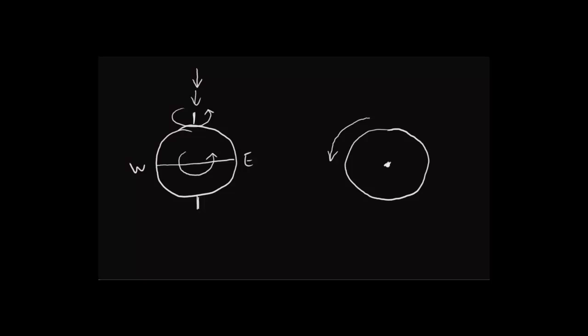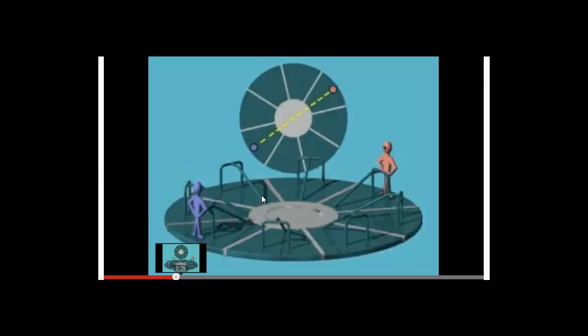Here's a merry-go-round illustration. The blue man just threw a ball to the pink man, and the yellow path shows the flight of the ball. The merry-go-round hasn't moved, they're standing still, and he throws the ball from point A to point B.